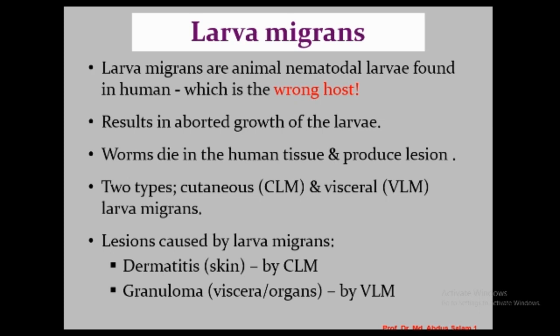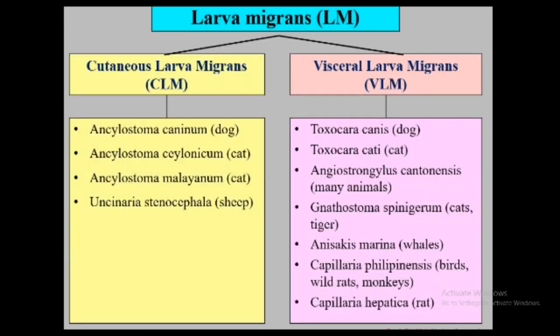There are two types of larva migrans. One infects or affects the cutaneous tissue of humans — we call this cutaneous larva migrans. The other affects the viscera or internal organs — designated as visceral larva migrans. Lesions produced by cutaneous larva migrans are basically dermatitis or inflammation of the skin, while lesions produced in internal organs by visceral larva migrans are manifested by granuloma, which is a chronic inflammation.